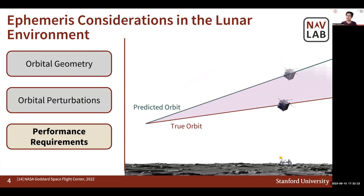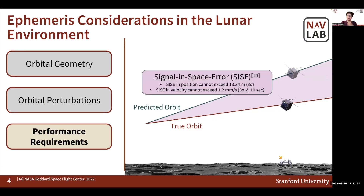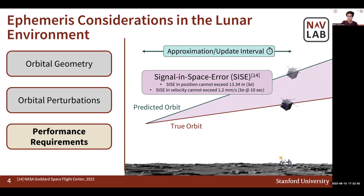Finally, the ephemeris parameters we design must meet certain performance requirements. First, we consider the signal-in-space error, or the instantaneous difference between true and predicted satellite state in orbit. NASA has established SIC constraints on position and velocity representations to determine whether the ephemeris approximation is an accurate representation of a true satellite state in orbit. Another performance metric is the approximation update interval. The length of time for which a certain parameter set is valid determines how often the parameters must be recomputed and updated in orbit and broadcast to the users. The lower the frequency of this update, the more efficient the methodology.